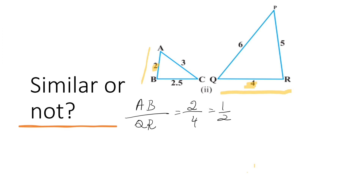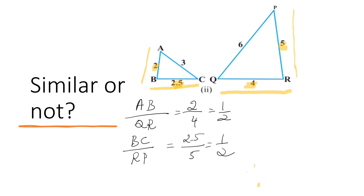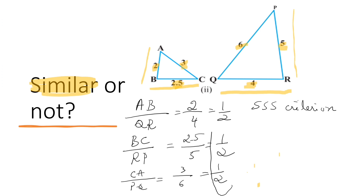Now, 2.5 into 2 is 5, so side BC corresponds to side RP. The ratio BC by RP is equal to 2.5 by 5, that is one half. Again, 3 into 2 is 6, so side CA corresponds to side PQ — that is 3 by 6, which is one half. So the triangles are similar by SSS criterion, since the ratios of corresponding sides are in proportion.